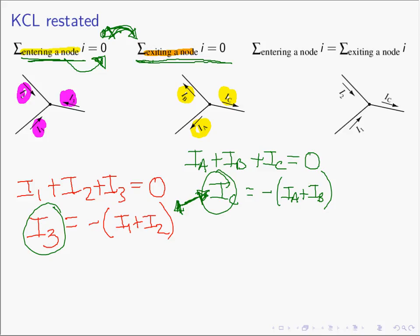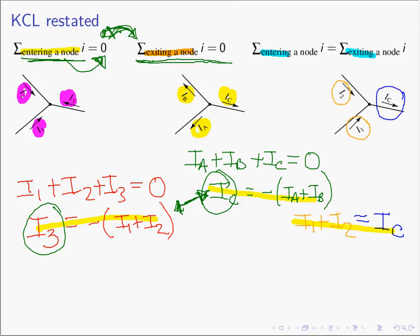The third way to write KCL is to take some currents entering the node and move them to the other side, giving: the sum of the currents entering a node equals the sum of the currents exiting a node. Working the example again: i1 and i2 enter the node, and iC exits. If i1 and i2 enter, they must exit — otherwise we've created or destroyed charges and violated conservation of mass. All three variations of KCL predict the same result.